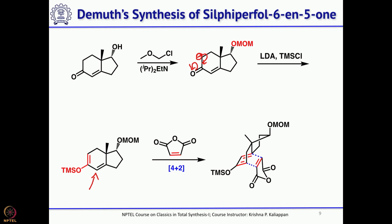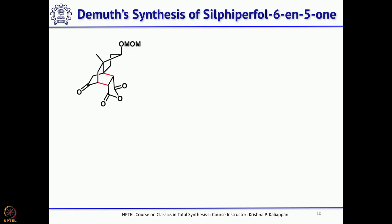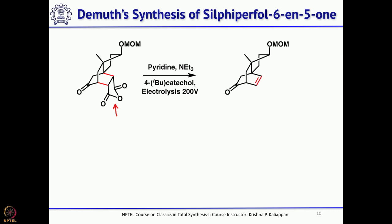Treatment with LDA and TMS chloride generates an anion which forms an enolate, and that enolate becomes the enol-TMS — this is the diene. The diene undergoes a Diels-Alder reaction with maleic anhydride to form the tetracyclic compound as intermediate, with the transition state shown. This anhydride is then converted to a double bond using electrolysis: hydrolysis followed by decarboxylation. This is the key precursor for the oxa-di-pi-methane rearrangement.